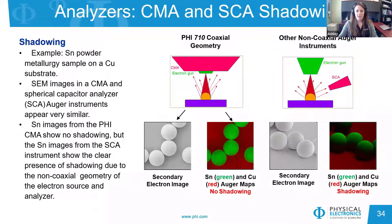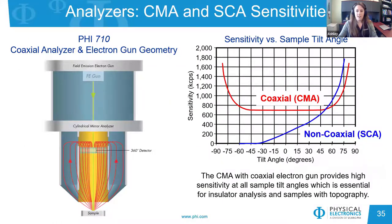In a CMA, the electron gun is on the same axis as the analyzer, whereas in an SCA, the analyzer is offset from the axis of the electron gun. Although SEM images obtained from both instruments appear very similar, there is significant shadowing in the SCA Auger image versus the Auger image obtained on a CMA instrument. Another benefit of the CMA is that it provides high sensitivity at all sample tilt angles, whereas the SCA has high sensitivity only as the sample is tilted toward the analyzer. Because of the coaxial geometry, insulators and samples with high topography are more easily analyzed on the CMA.